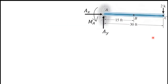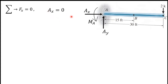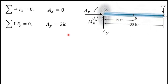Our first step is to find the support reactions. This is a fixed support, so we mark three components: two force components and one moment component — Ax, Ay, and moment Ma. Considering the sum of all horizontal forces, there are no other horizontal forces than Ax, therefore Ax equals zero. Considering the sum of all vertical forces, Ay equals 2k.